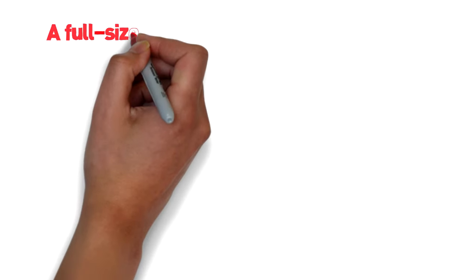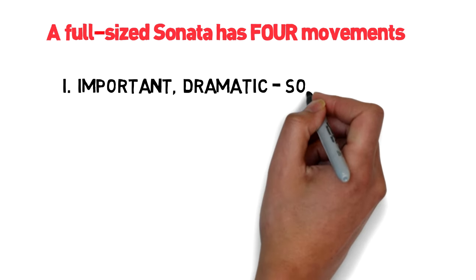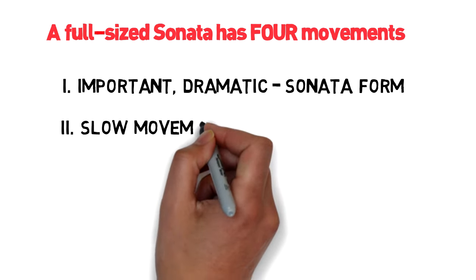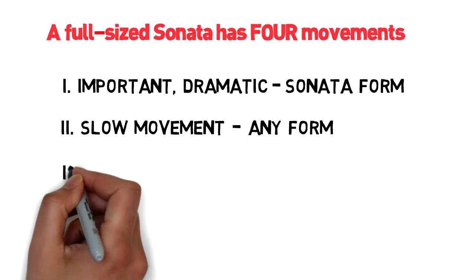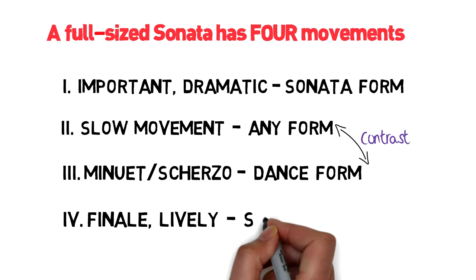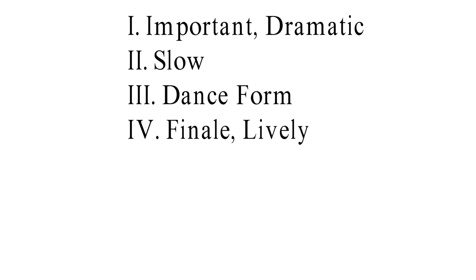Normally a full-sized sonata will have four movements. The first is an important and typically dramatic movement and this will almost always be in sonata form. Then there'll be a slow movement, which could take any form ranging from lyric forms to sonata form just like the first movement. There'll be a minuet or scherzo which will mimic to some extent the forms of classical dance music, giving a nice contrast to the slow movement. And the last movement will be a finale, generally lively, often in sonata form like the first movement but typically in rondo form. This sequence of movements provides a great opportunity for contrast and musical interest.